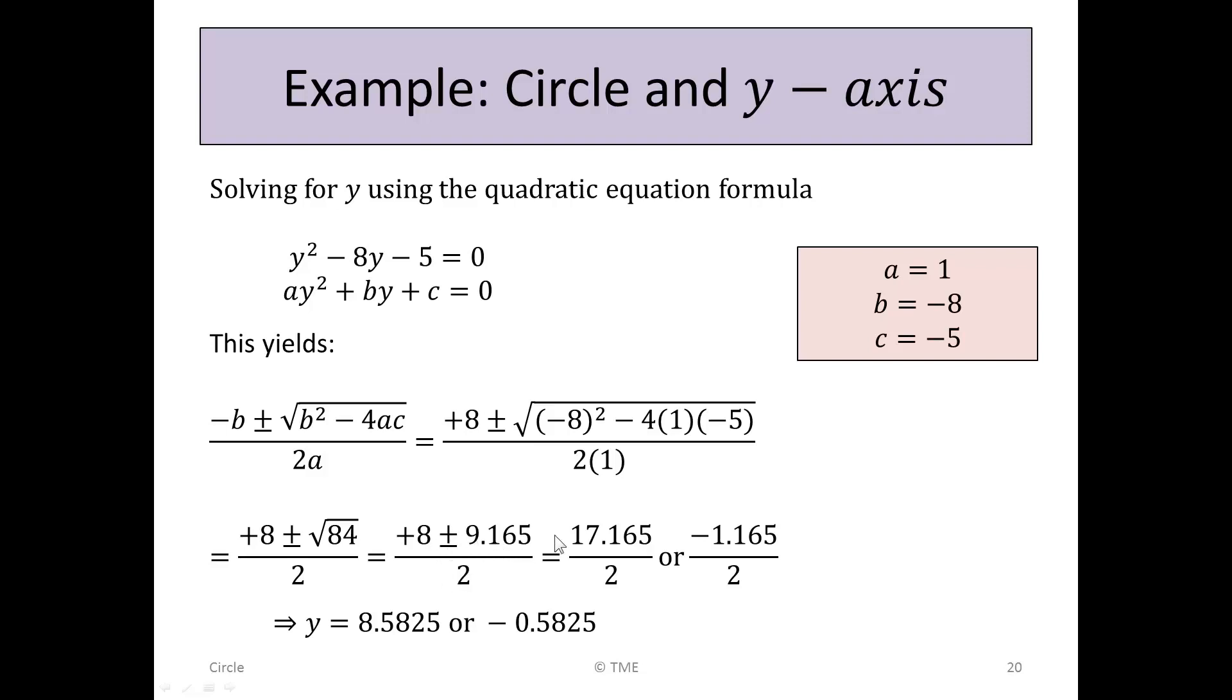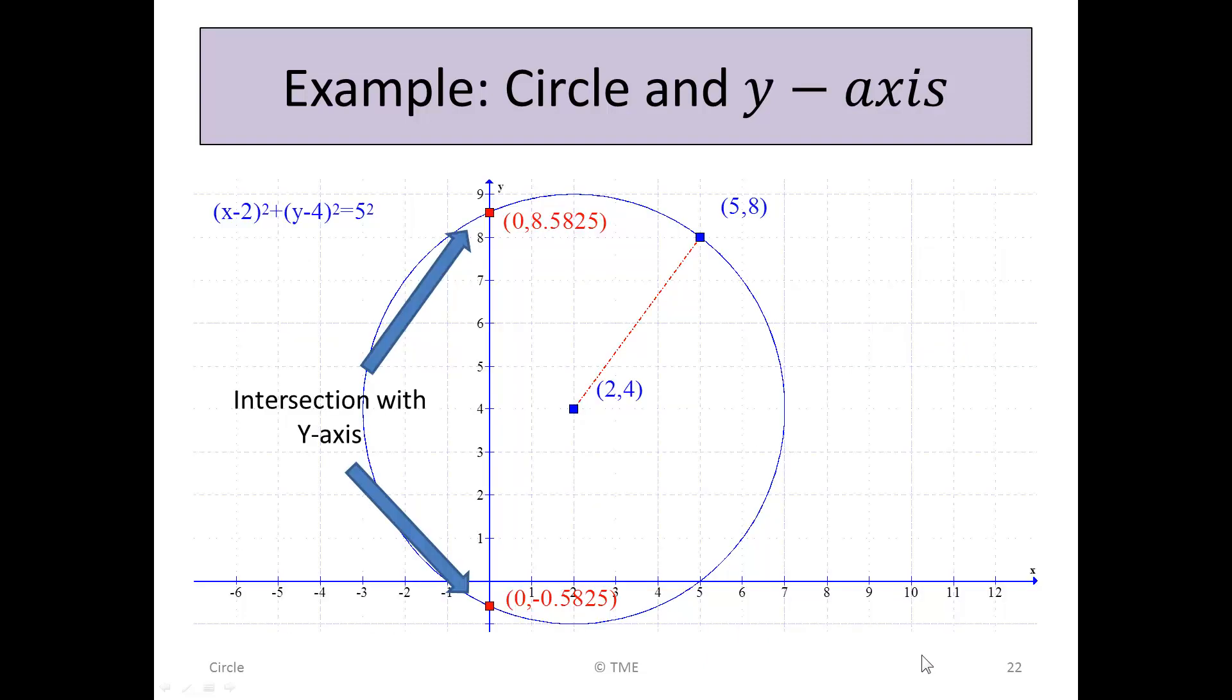So we have 8 ± 9.165 if we do that on a calculator. Taking the plus value, we get 17.165 / 2, and taking the minus, we get -1.165 / 2. If we divide 17.165 / 2, we get +8.5825, and -1.165 / 2, we get -0.5825. So there are the y values, and we know the x values would be 0, so the x value would be 0 with coefficient 8.5825, or 0 with coefficient -0.5825. On the diagram, we can see that the points of intersection are (0, 8.5825) or (0, -0.5825).